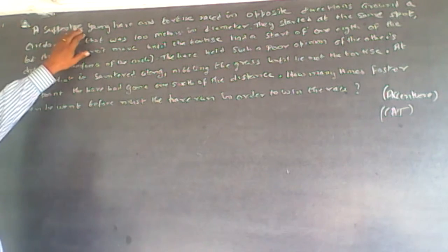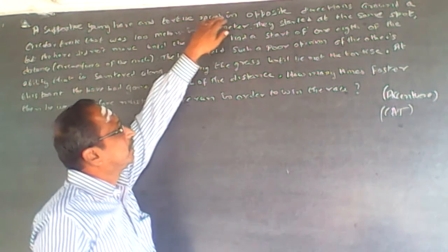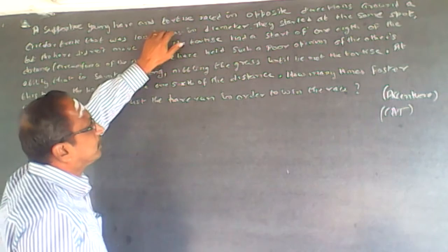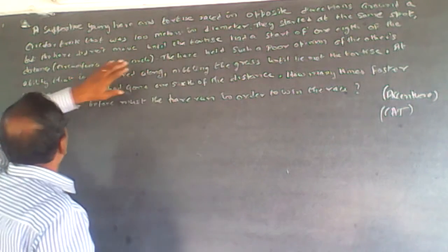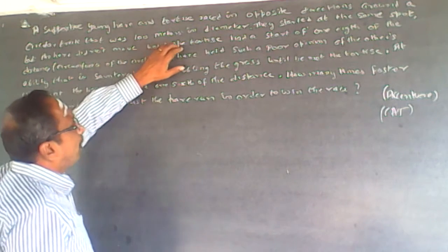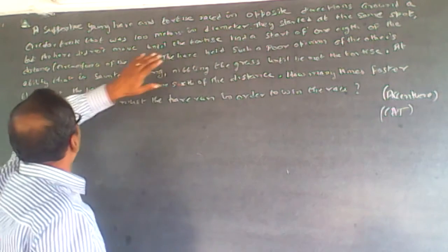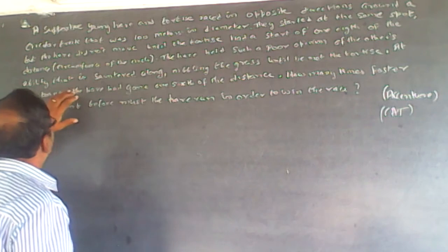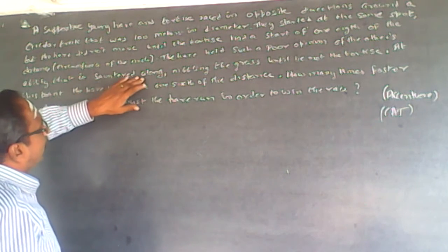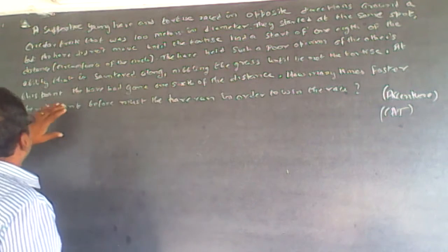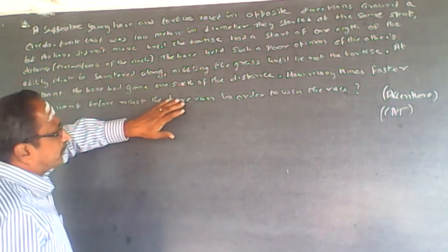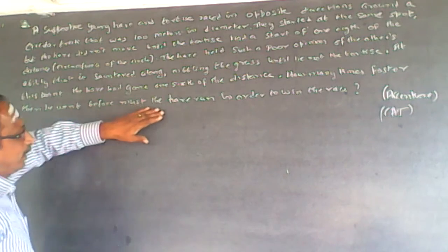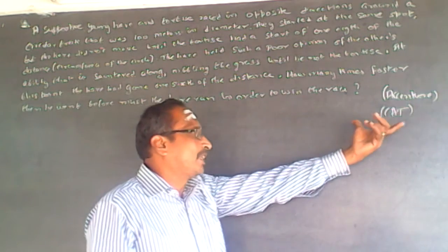The question involves a hare and tortoise racing in opposite directions around a circular track that was 100 meters in diameter. They started at the same spot, but the hare did not move until the tortoise had a head start of one-eighth of the distance — that is, one-eighth of the circumference. The hare had such a poor opinion of the other's ability that it sauntered along nibbling grass until the tortoise met it, at which point the hare had gone one-sixth of the distance. How many times faster than it went before must the hare run in order to win the race? This question has been asked in Accenture.